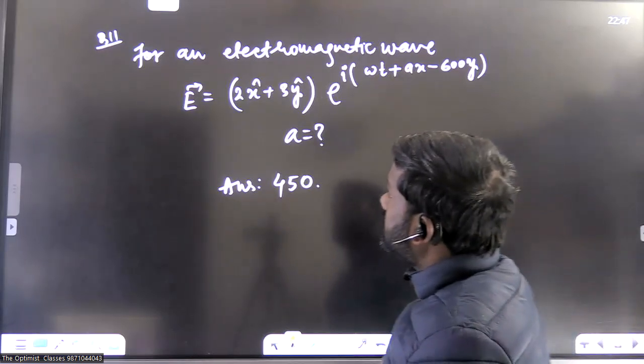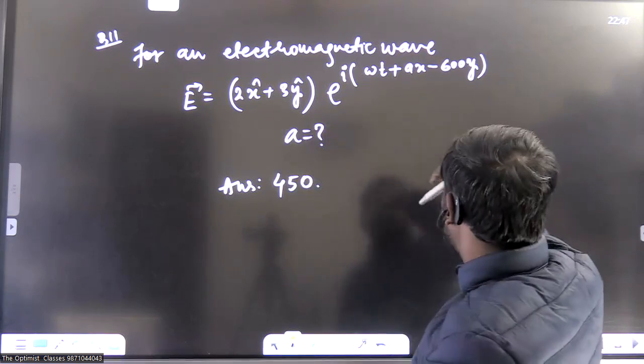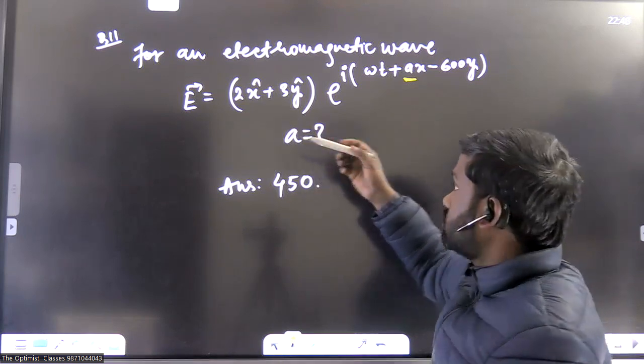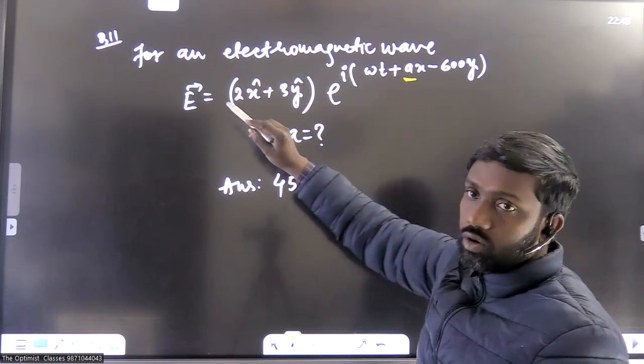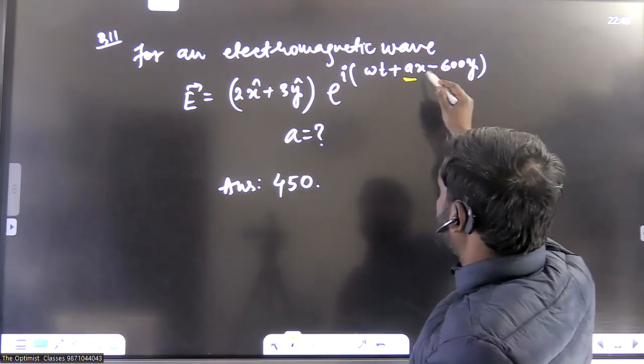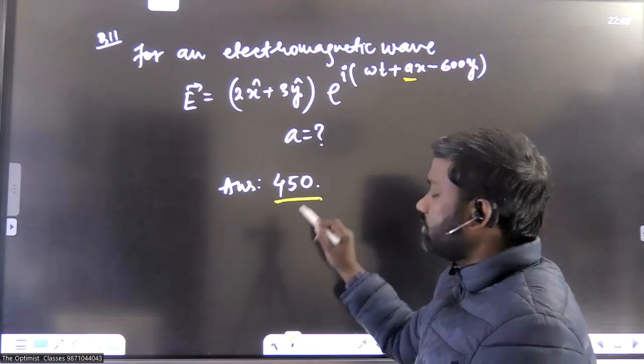Now this is another question. It says for an electromagnetic wave, the electric field is given to be this much. So here we have to find a value. This is also a very simple question. You can just calculate propagation constant from here. And K dot E, we know that electromagnetic waves are transverse in nature, so K dot E equal to zero. So from here, you will get the value of A and answer will be 450.